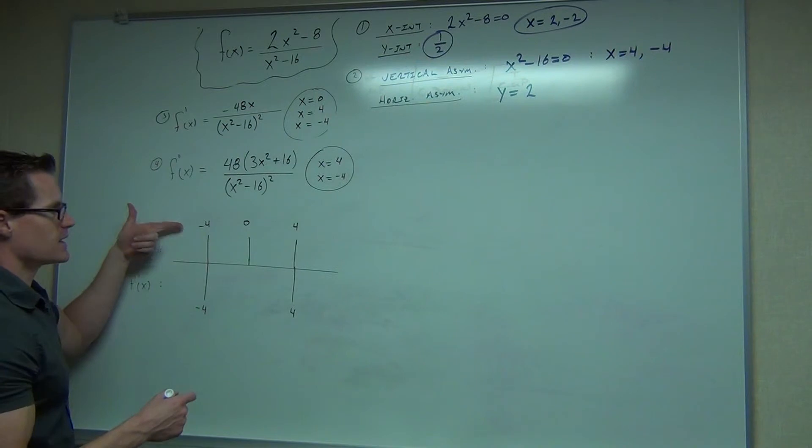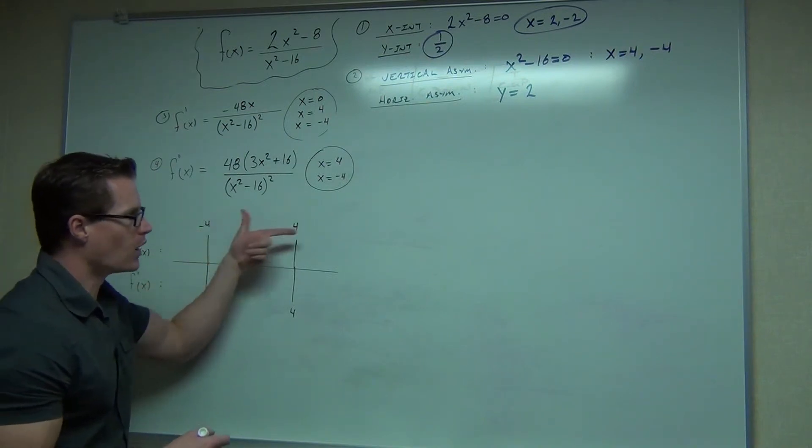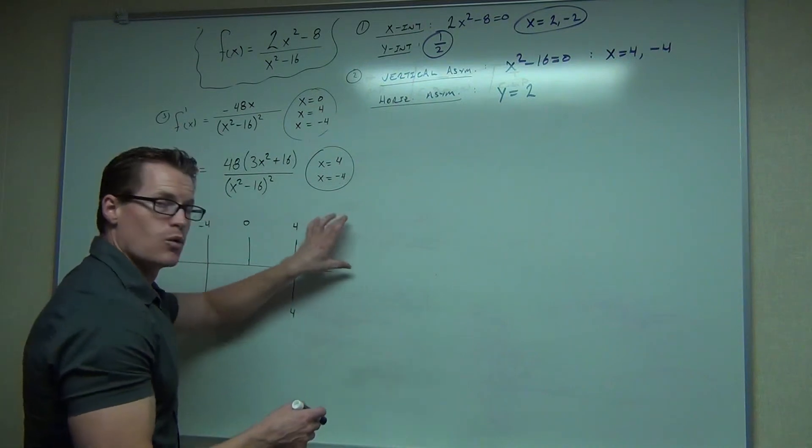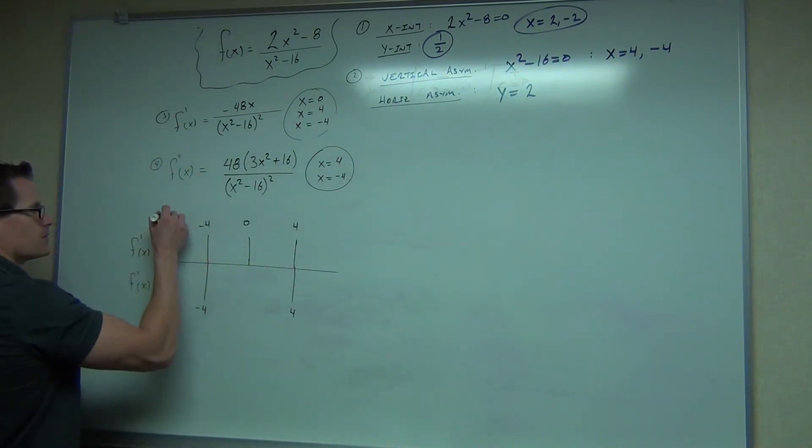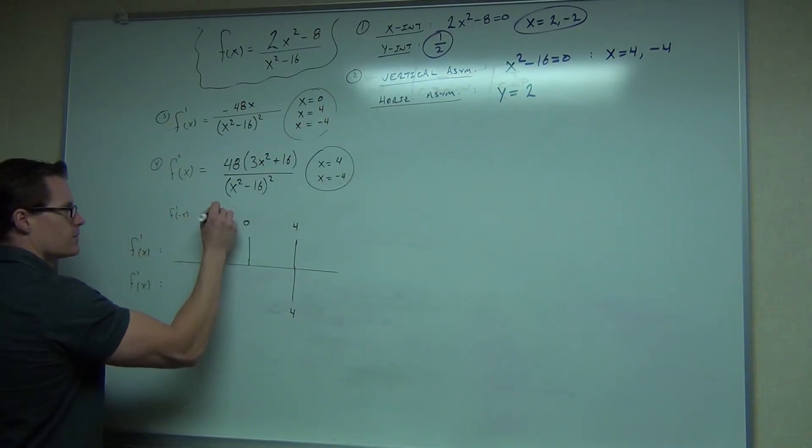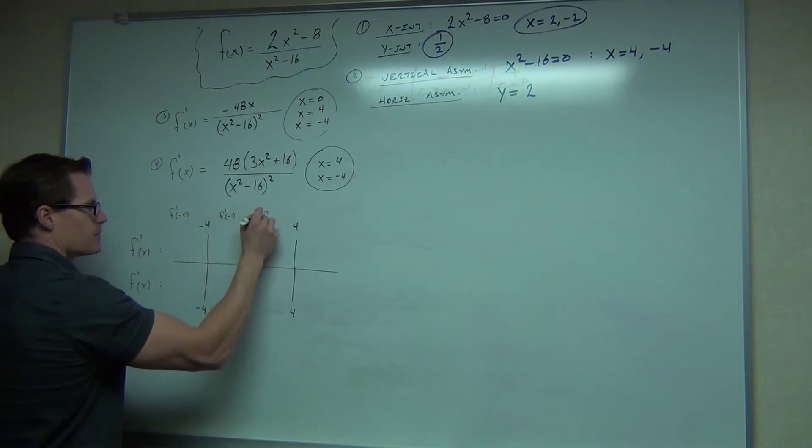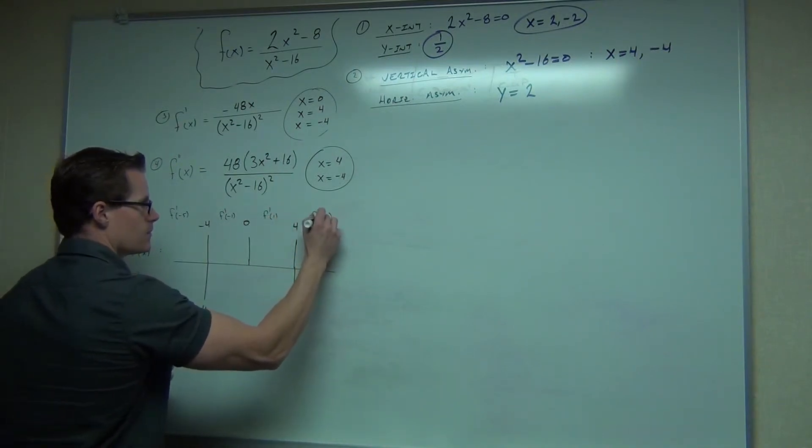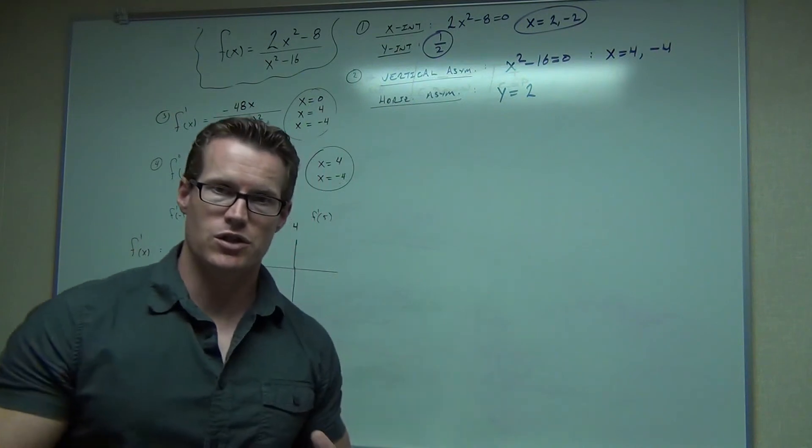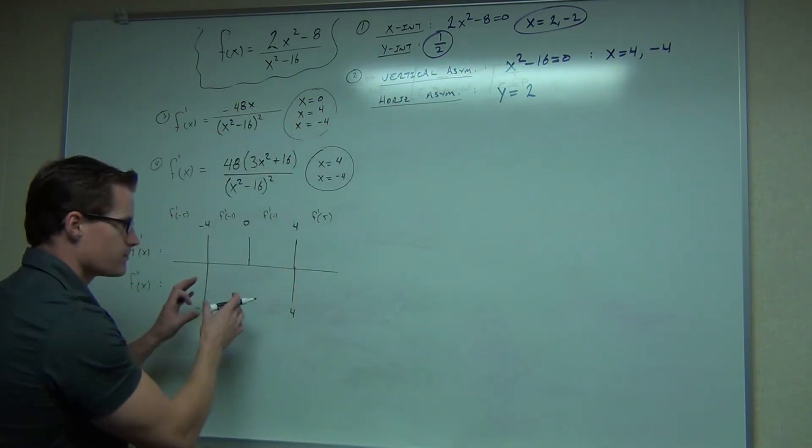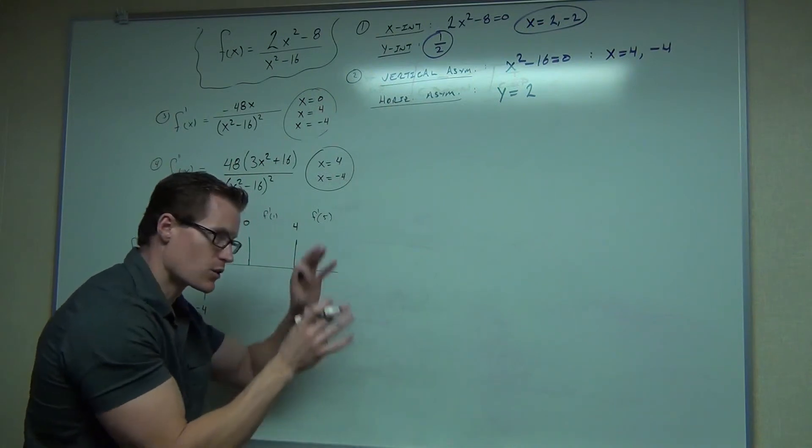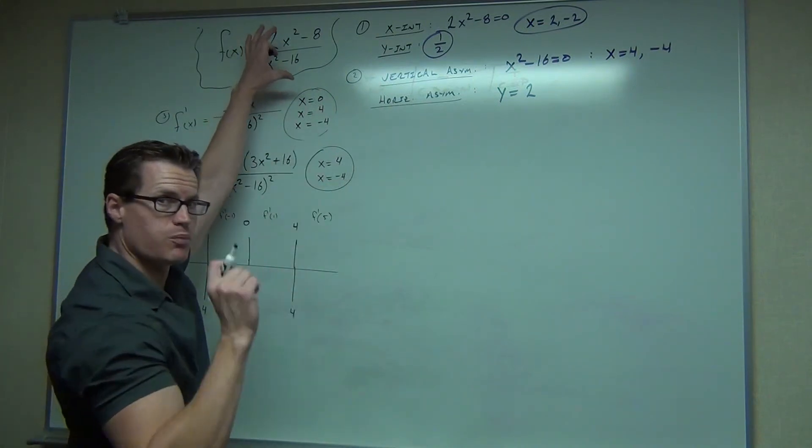And what we do is we test specific points in each interval. And what that's going to tell us is where our graph is increasing or decreasing from the top. That's our first derivative or concavity for our second derivative. So I would test the points like negative 5, negative 1, 1, and 5. And we're testing them in the respective derivatives. So here, we'll be using the first derivative.